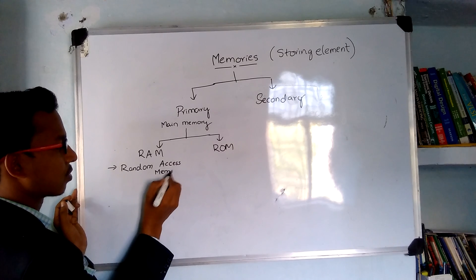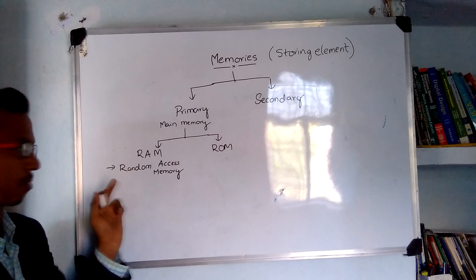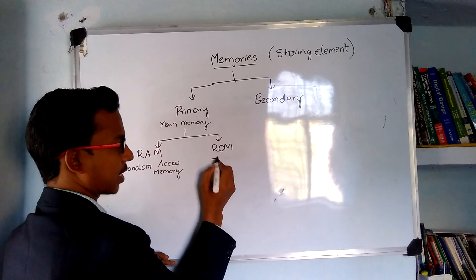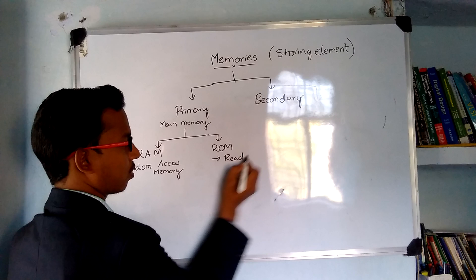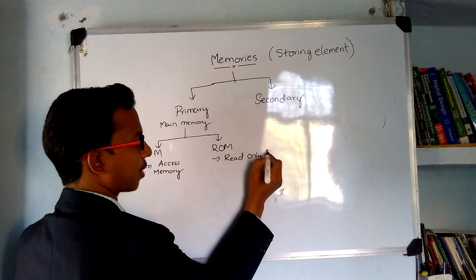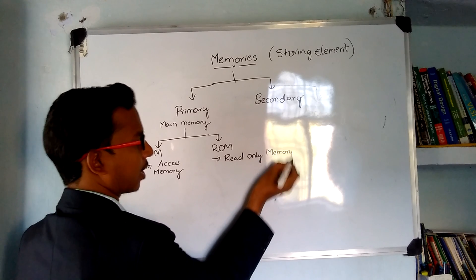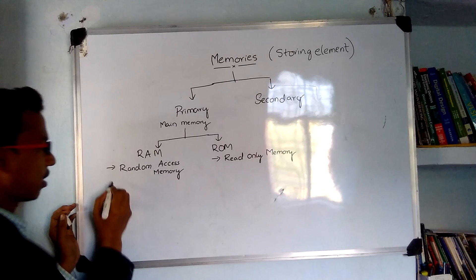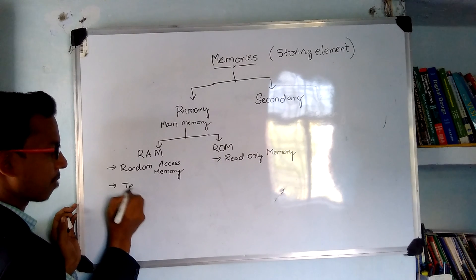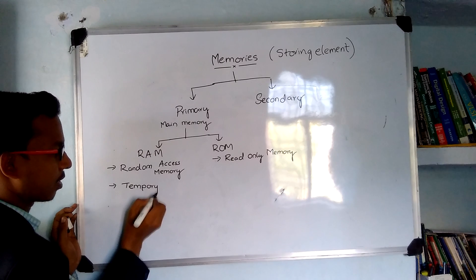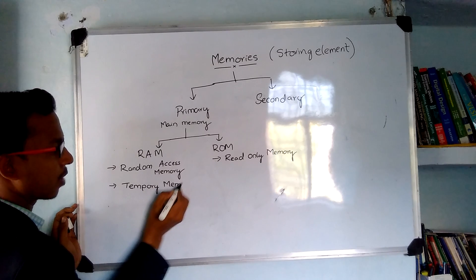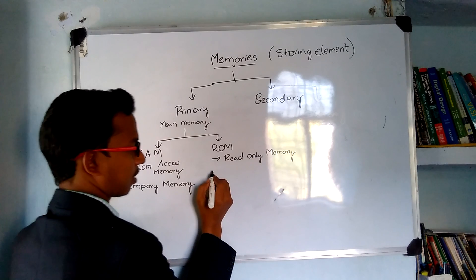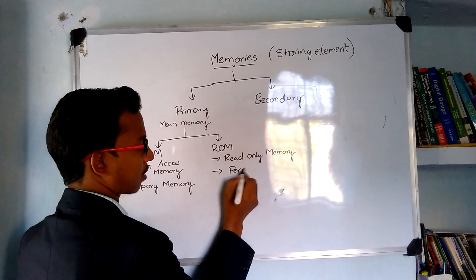The full form of ROM is Read Only Memory. RAM is a temporary memory, whereas ROM is called permanent memory or permanent storage.